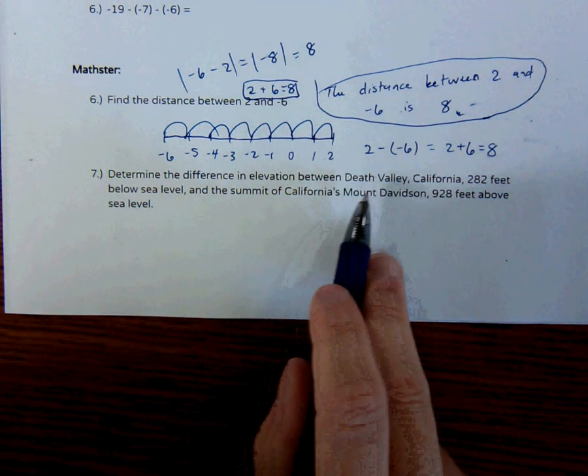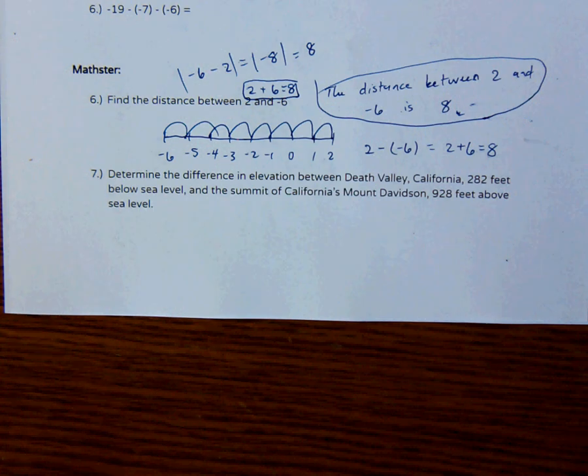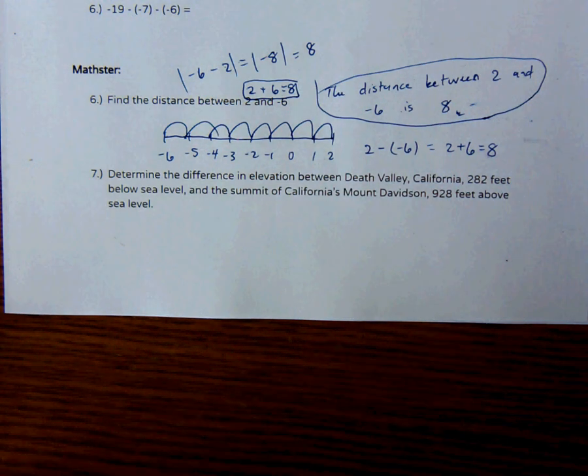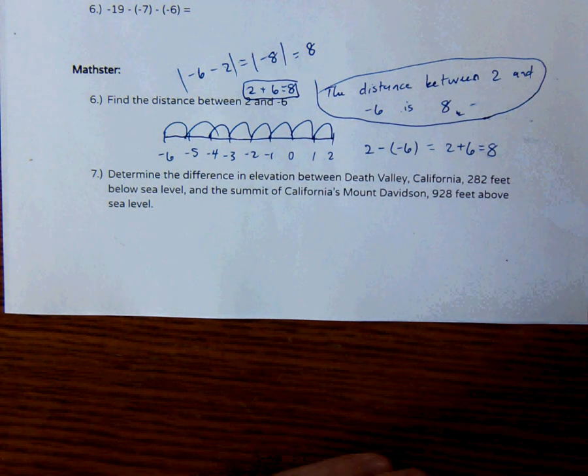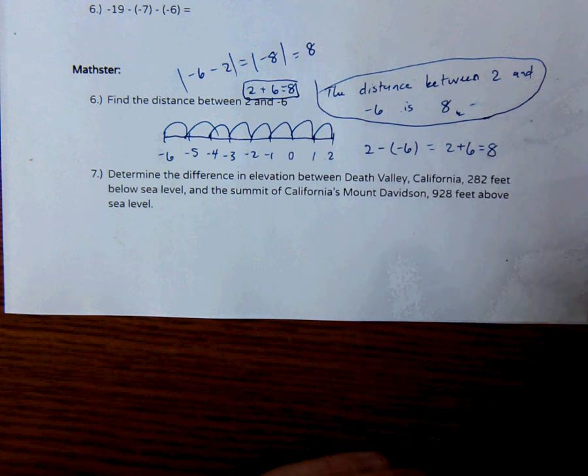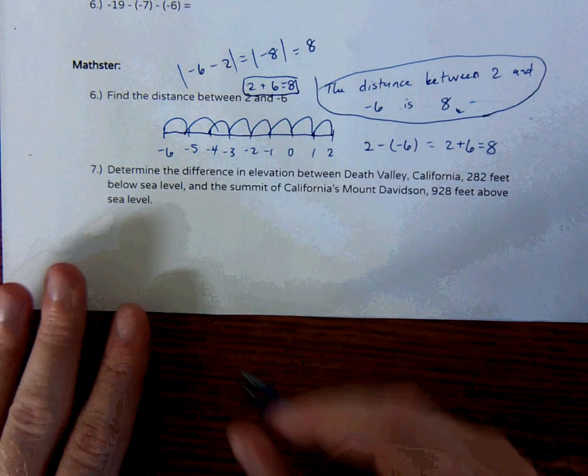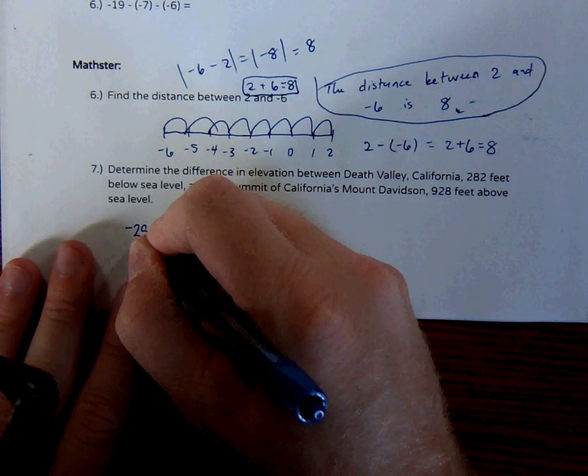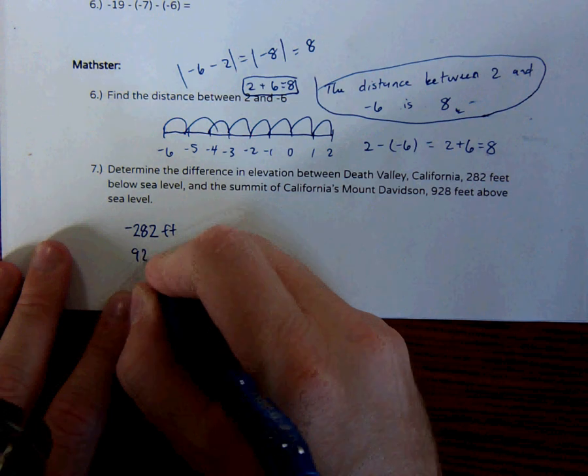For example, determine the difference in elevation between Death Valley, California, 282 feet below sea level, and the summit of California's Mount Davidson, 928 feet above sea level. So we have two numbers. We have negative 282 feet and positive 928 feet.